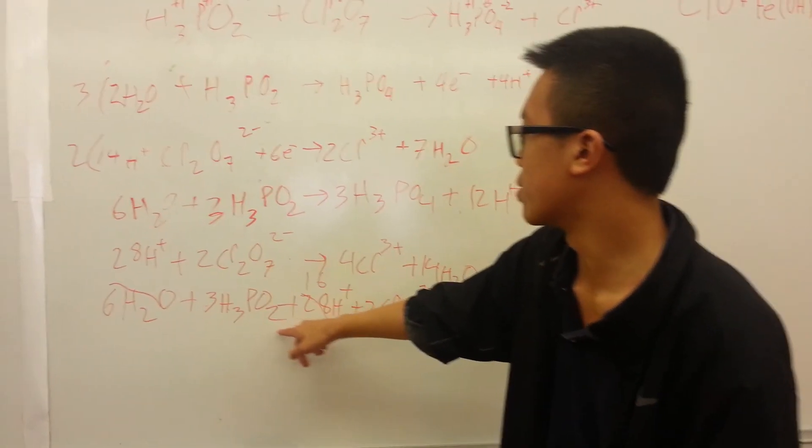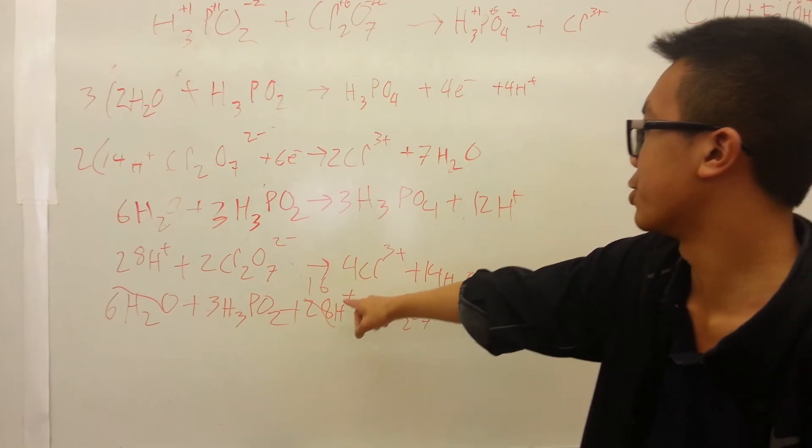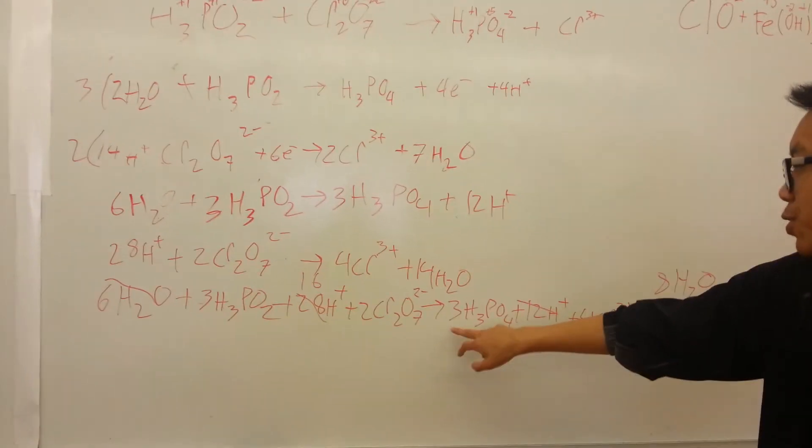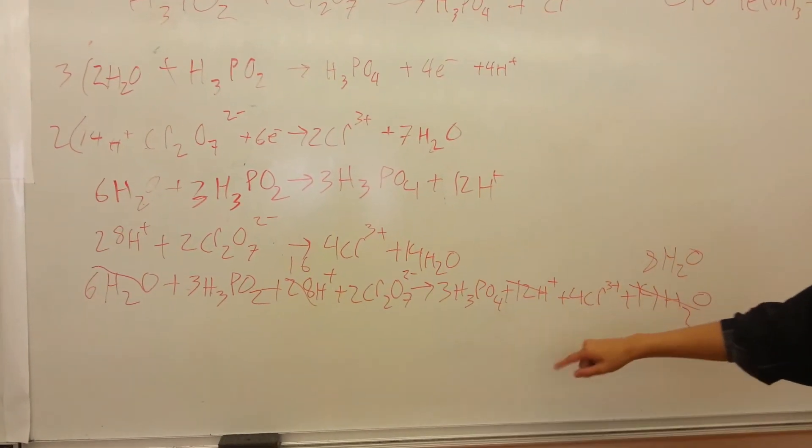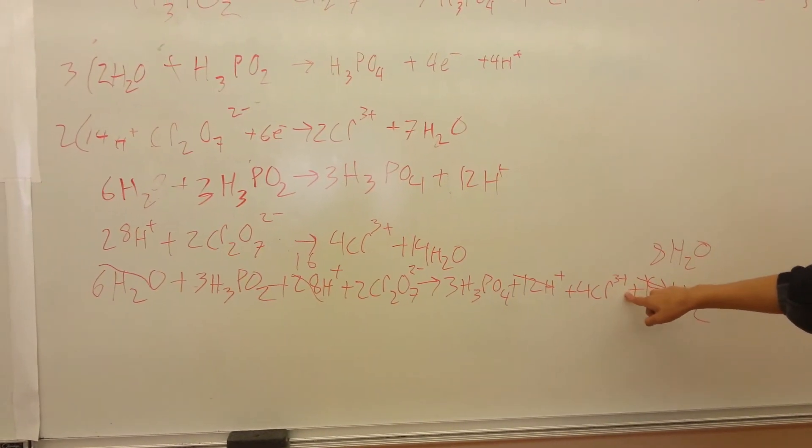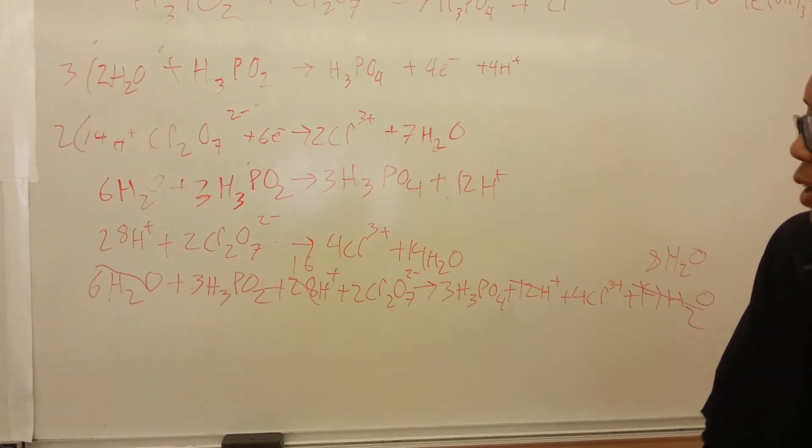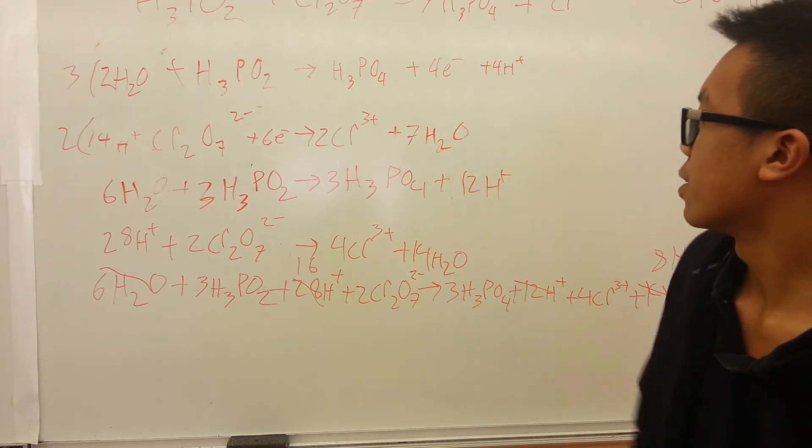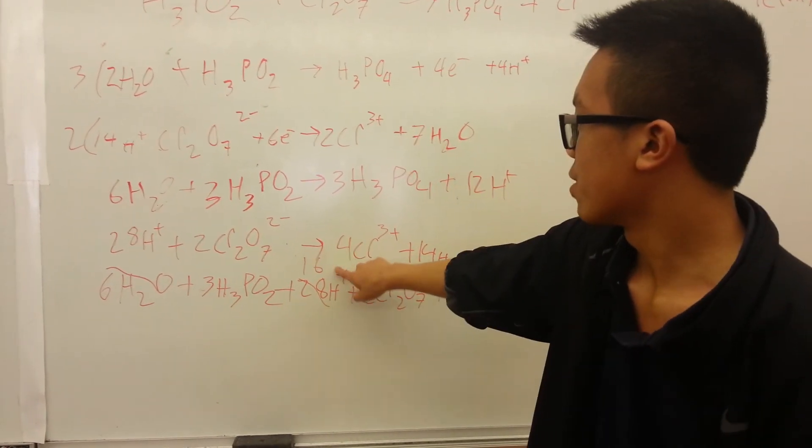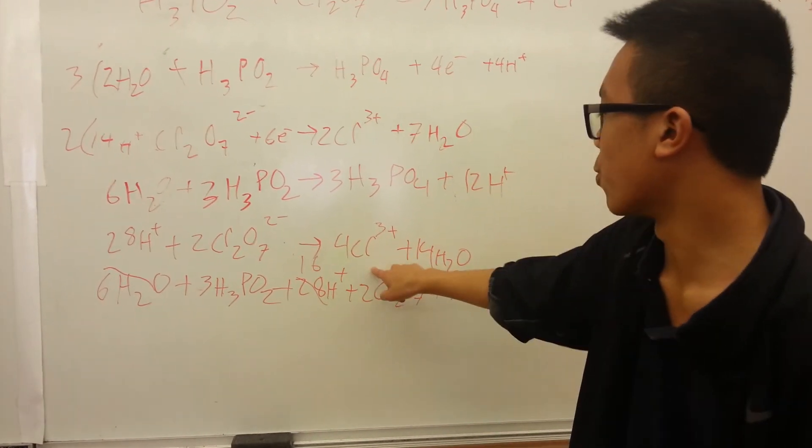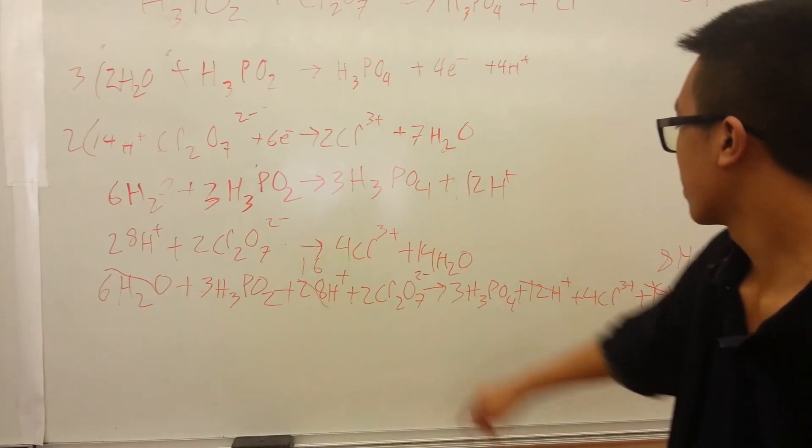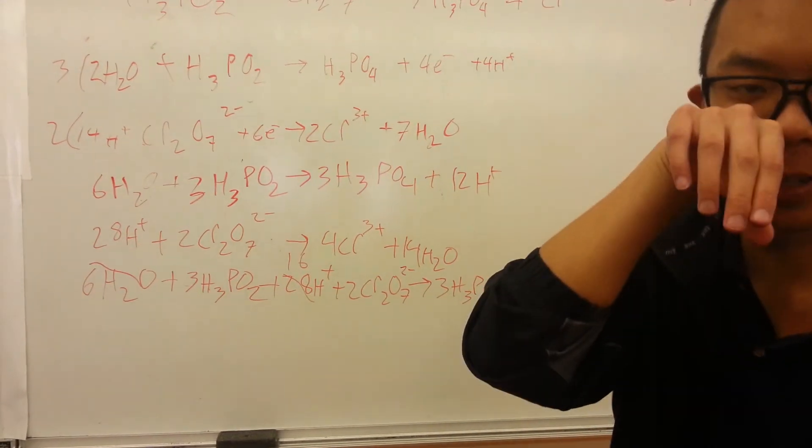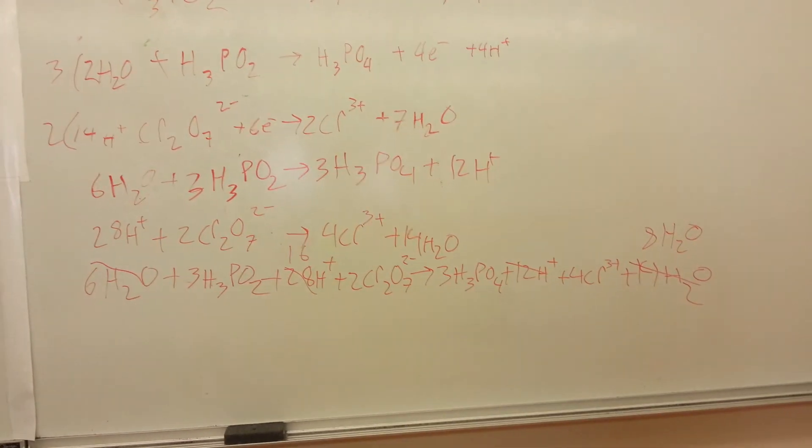So our final answer would be 3H3PO2 plus 16H+ plus 2CR2O7 2- goes to 3H3PO4 plus 4CR3+ plus 8H2O. And to make sure that's right, you balance it. This is 16, and this is 2 times 4, so this will be 12, and right here this will be 12, so they balance each other out. Cool.